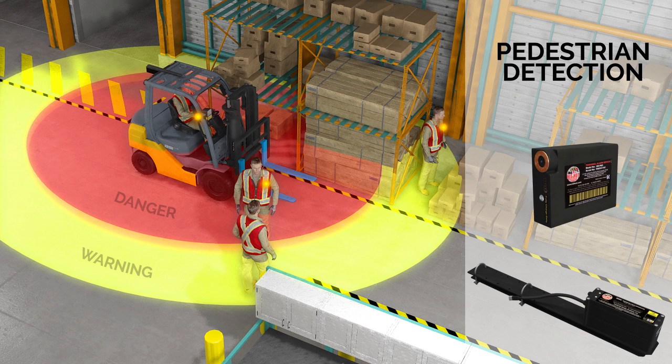As shown, multiple pedestrians with pads can be in the warning or danger zone of the generator, with all units receiving their alert. Each pad provides the warning or danger alert depending on their proximity to the mobile equipment.